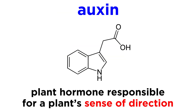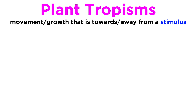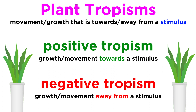Earlier in this series, when we learned about plant growth, we mentioned a plant hormone called auxin, which allows plants to possess a sense of direction. Auxin, along with several other chemicals found in plants, is responsible for plant tropisms, which means movement or growth towards or away from a stimulus. A positive tropism is growth or movement towards a stimulus, and a negative tropism is growth or movement away from a stimulus.